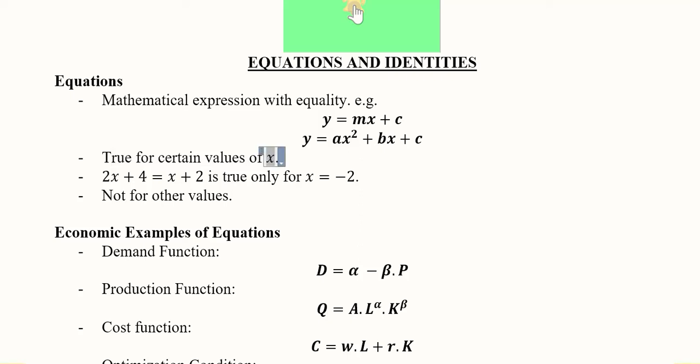When we put certain values of x the answer will be verified, that is right hand side will be equal to left hand side so that equality will be established. But this might not happen for all of the values. For example, this is happening only when x is equal to minus two.